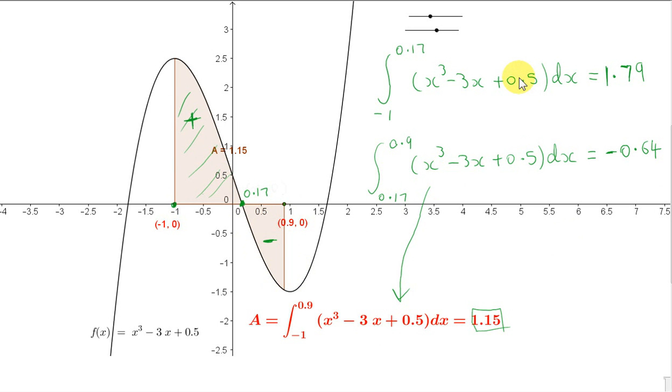So to get the integral from minus 1 to plus 0.9 of f of x dx, we can just put these together. So if we put these numbers together, we get 1.15.